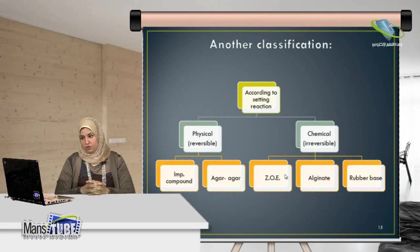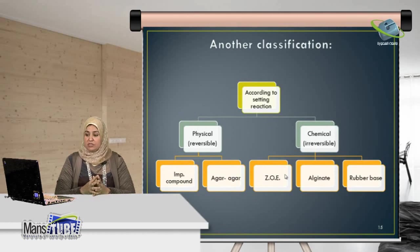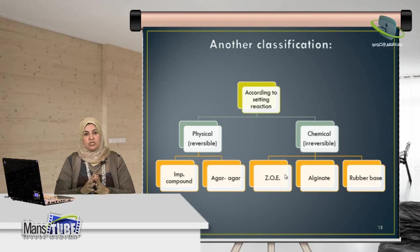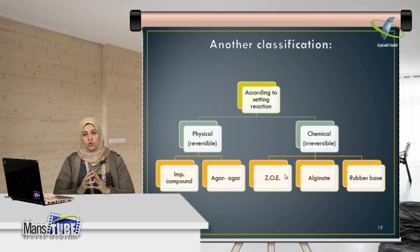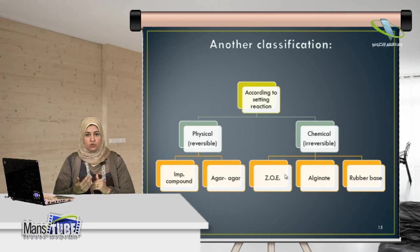There is another classification of impression materials according to their setting reaction. Some materials set by physical reaction and others by chemical reaction. Physical reaction is always reversible because it depends on heating and cooling. When I heat the material it becomes soft, and when it cools it becomes hard again. Materials that set by physical reaction are reversible and reusable — they can be used many times, after disinfection.